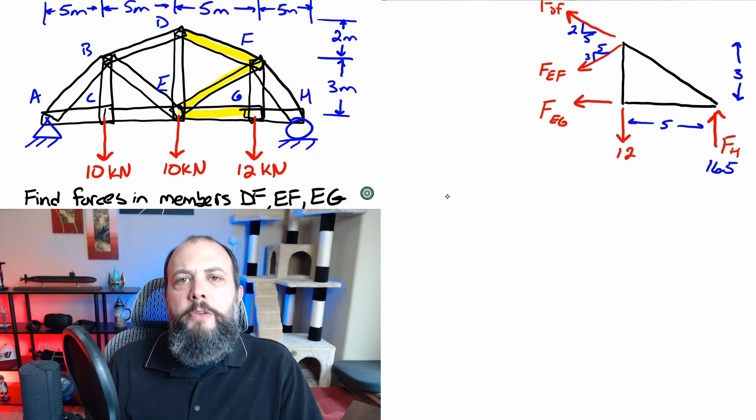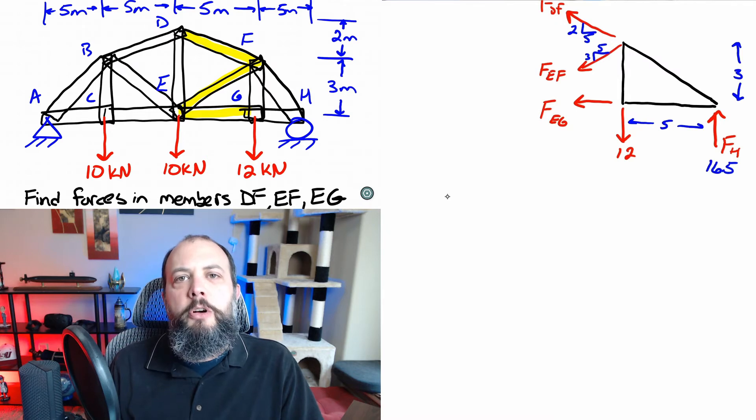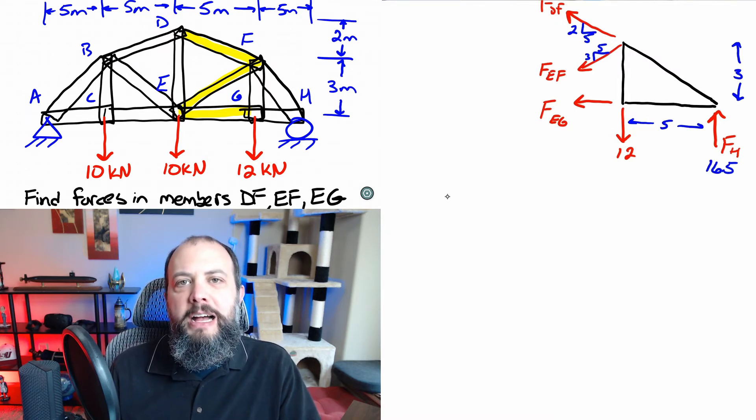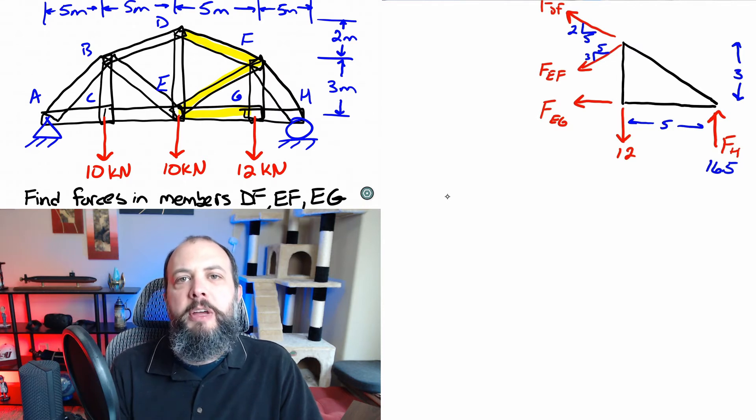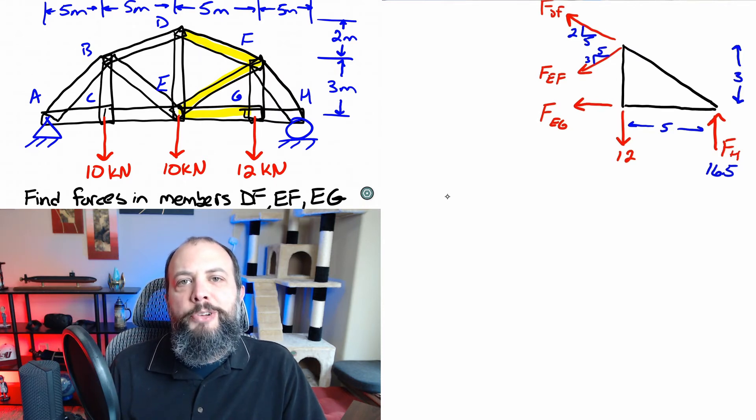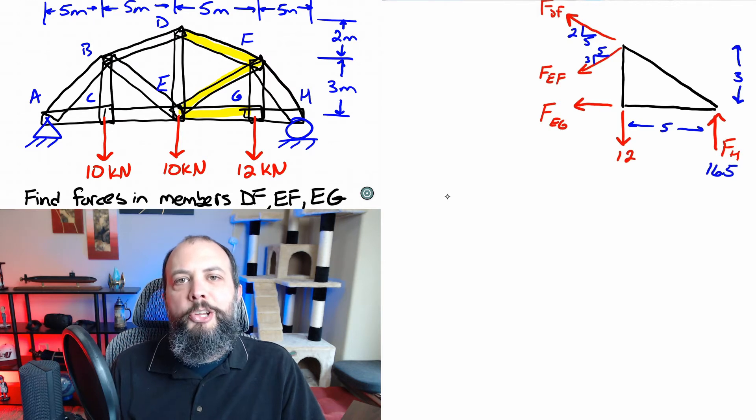So for method of sections we'll assume that we've already completed the step where we've solved for the reaction force on the right hand side at H as 16.5. This was the same way we started the method of joints problem. And now the goal is going to be to solve for each of our three unknowns with one single equation instead of a simultaneous set of three equations and three unknowns.